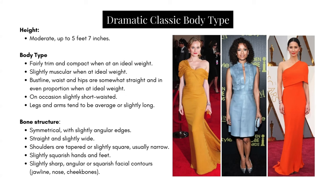Now let's look at the Dramatic Classic body type. Height is moderate, up to 5'7". The body type is fairly trim and compact at what Kibbe describes as an ideal body weight — not too skinny and without any excess weight, just at their normal weight. They tend to be slightly muscular at ideal weight, and the bust line, waist, and hips are somewhat straight and in even proportion. On occasion they can be slightly short-waisted.